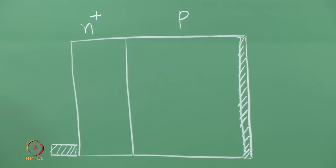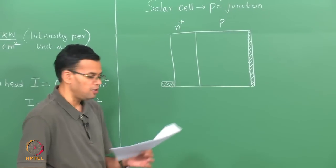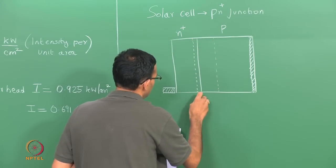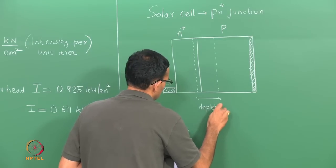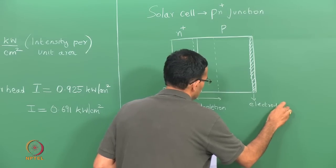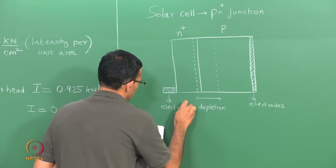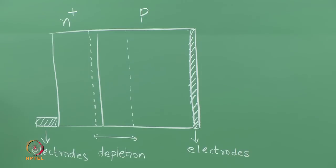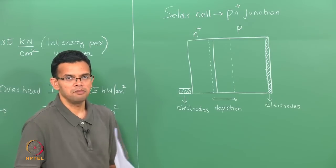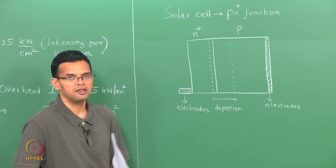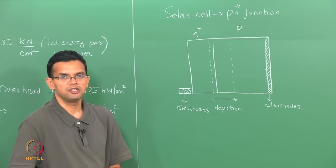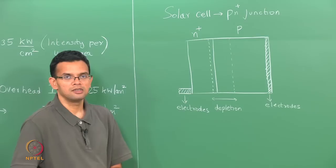The n+ region is heavily doped. In this case the depletion region will lie almost entirely on the p side — we have a very thin depletion region on the n side and a much thicker one on the p side. We have solar radiation coming from the left and falling on the n+ region. The radiation can have both long, medium, and short wavelengths. Shorter wavelengths are usually absorbed by the n+ region because the absorption coefficient is large, hence the penetration depth is small, while as wavelength increases the penetration depth also increases.